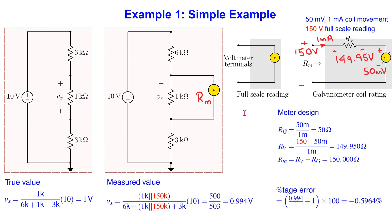Now let us consider the same problem but with a voltmeter having a 150 volt full-scale reading. The coil ratings are the same as before. For this meter we can work out the meter resistance and use it to work out the measured value. In this case we can see that the percentage error is less than approximately minus one percent — the measured value is more accurate. This makes intuitive sense because the effective meter resistance is 150 kilohms, which is much larger compared to the one kilohm resistance.